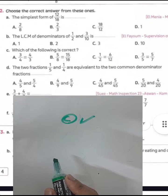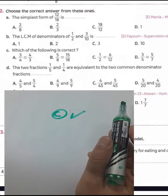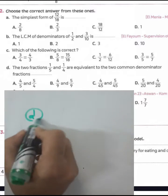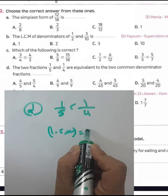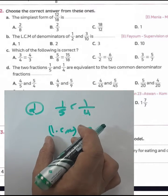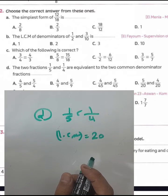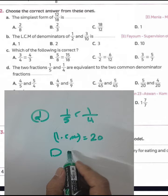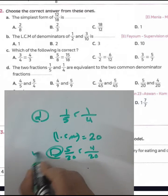Question letter D: convert one over five and one over four to equivalent fractions with a common denominator. Since four and five are relatively prime numbers, the least common multiple of the two denominators is four times five equals twenty. So one over five becomes four over twenty and one over four becomes five over twenty. Choose letter D.